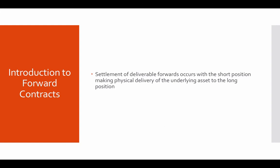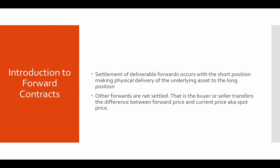Settlement of deliverable forwards occurs with the short position making physical delivery of the underlying asset to the long position, because the short is the one who has the right to sell the asset — that's why he has to make delivery in the case of a deliverable forward. Other forwards are net settled. These are also known as contracts for differences, non-deliverable forwards, and cash settled forward contracts.